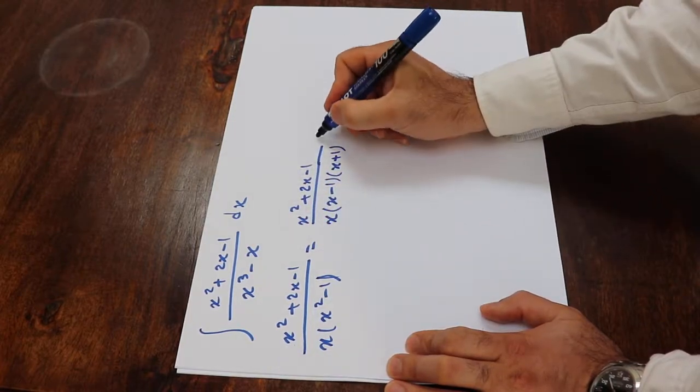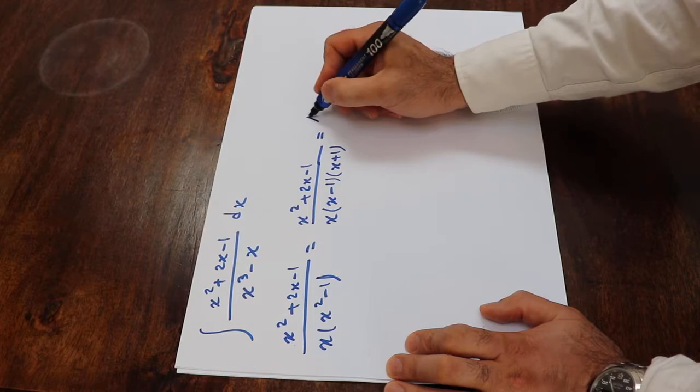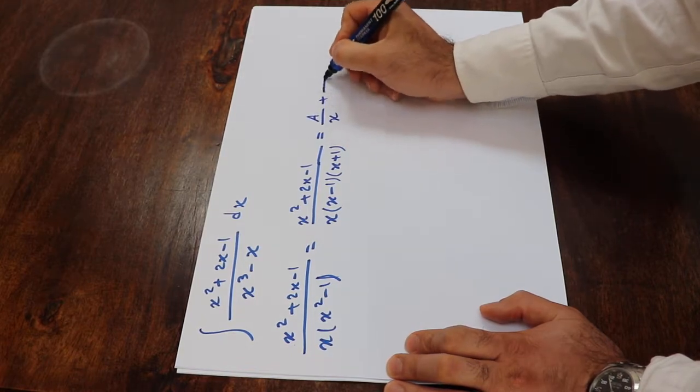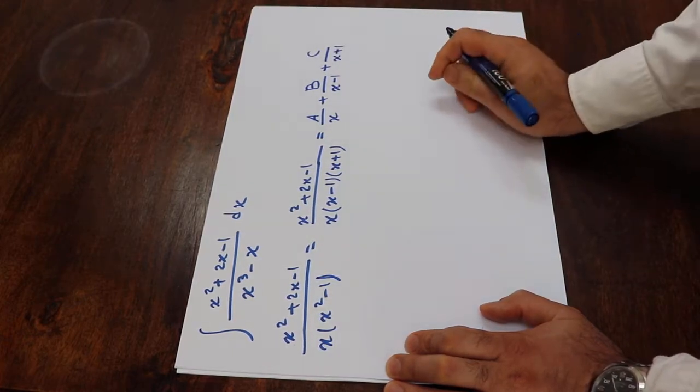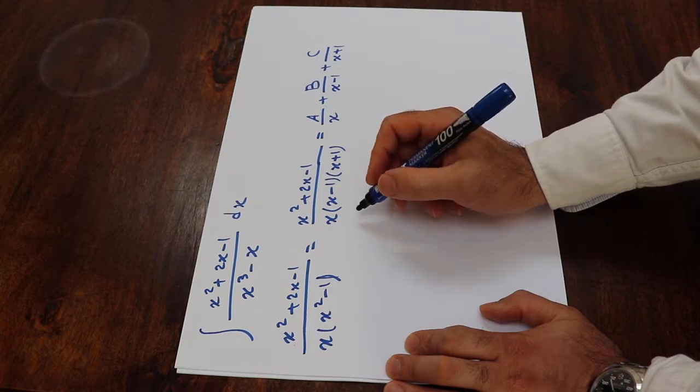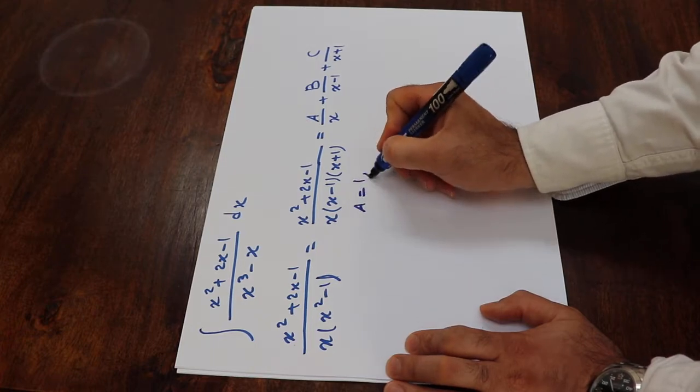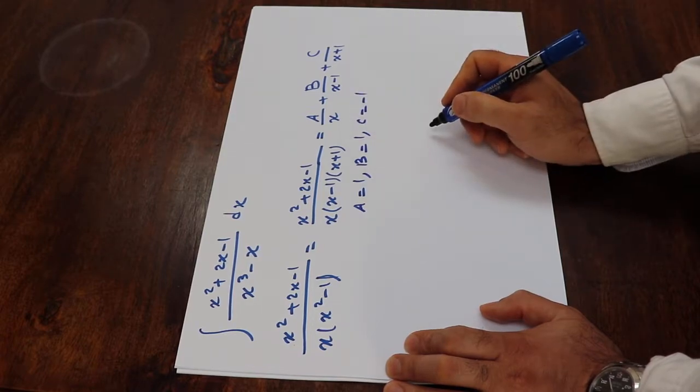So now, to express it as the sum of the partial fractions, you should write it as A divided by x plus B divided by x minus 1 plus C divided by x plus 1. So here, if you do the algebra, you'll get that A will be equal to 1, B will be equal to 1, and C will be equal to -1.